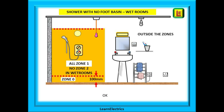For a shower with no footbasin, as in wet rooms, things are slightly different. The height of Zone 0 is taken as 100 millimetres, and all the space above up to 2.25 metres is Zone 1. There is no Zone 2 in a wet room — we go straight to the outside zones.